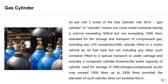What is a gas cylinder? As per Rule 2.23 of the Gas Cylinder Rule 2016, a gas cylinder or cylinder means any close metal container having a volume exceeding 500 milliliters but not exceeding 1000 liters, intended for the storage and transport of compressed gas, including any LPG container or CNG cylinder fitted to a motor vehicle as its fuel tank, but not including any other such container fitted to a special transport or undercarriage, and includes a composite cylinder.